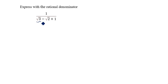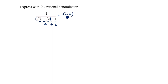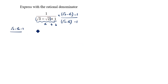You see the denominator has three terms. We will take the first two digits as 'a' and the next one as 'b'. You see the symbol here is plus, so to rationalize the denominator we multiply by root 3 minus root 2 minus 1 divided by root 3 minus root 2 minus 1. This is the form a plus b times a minus b.